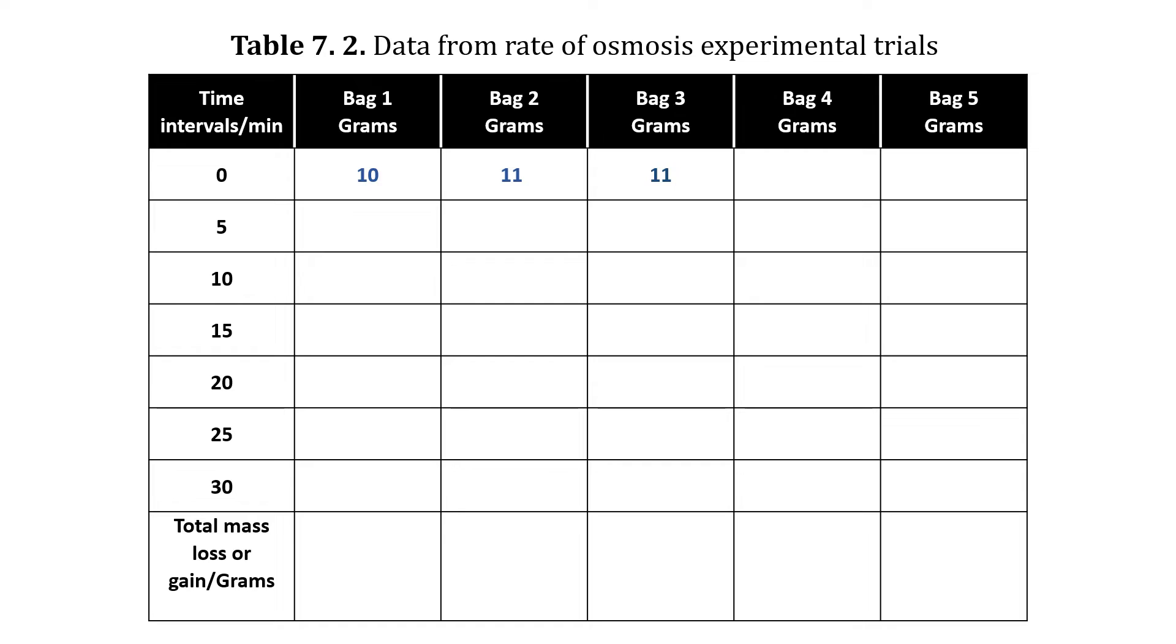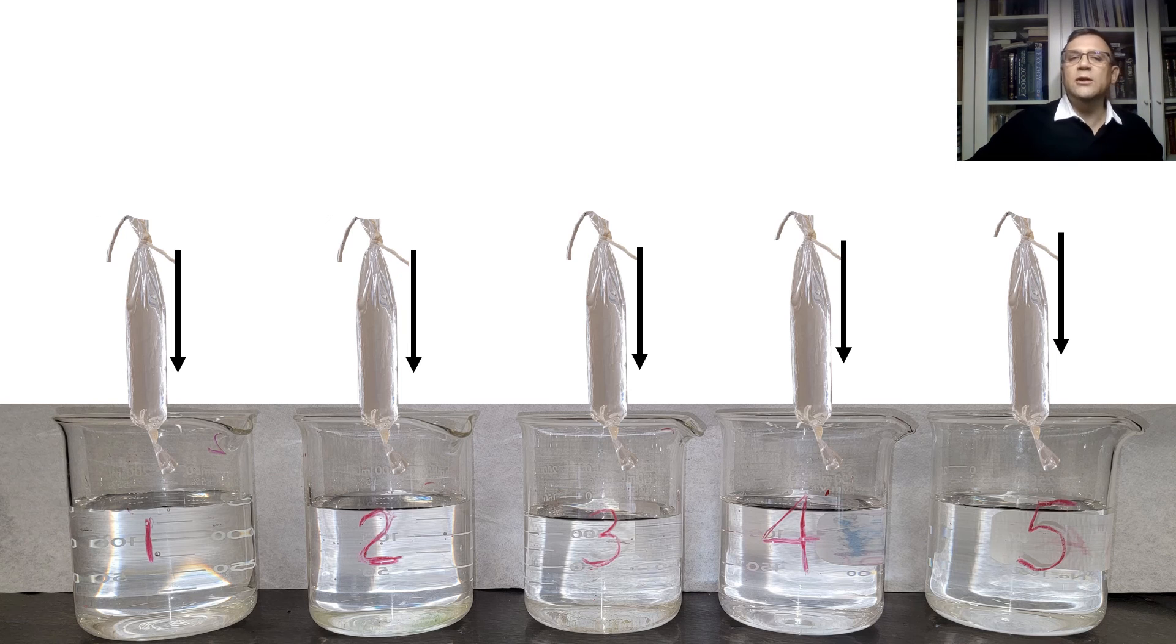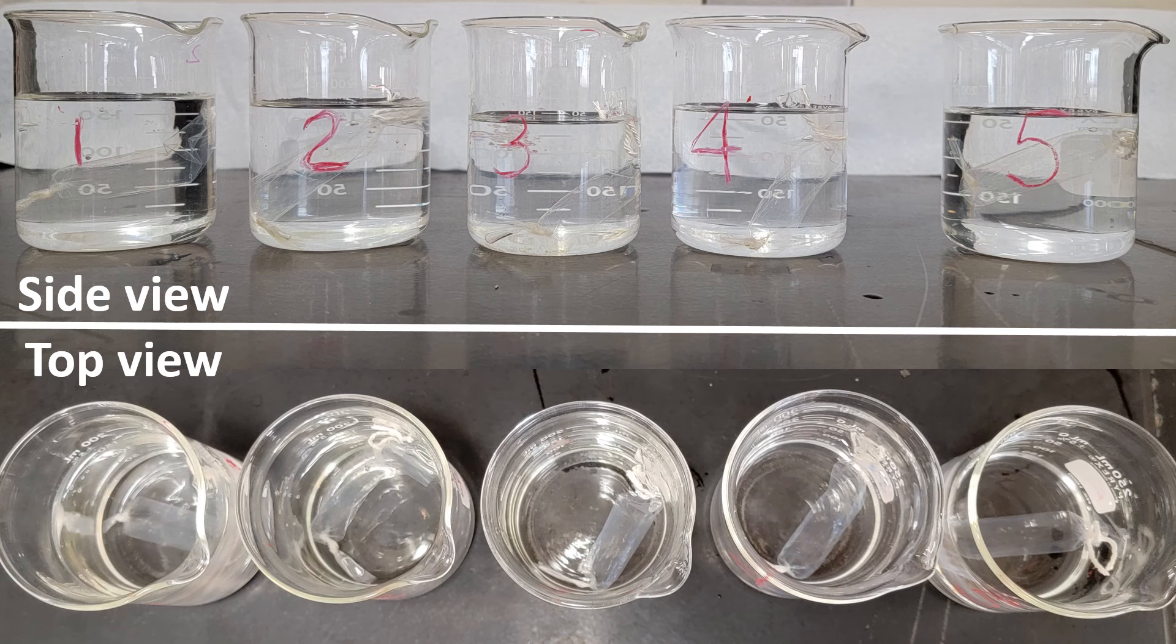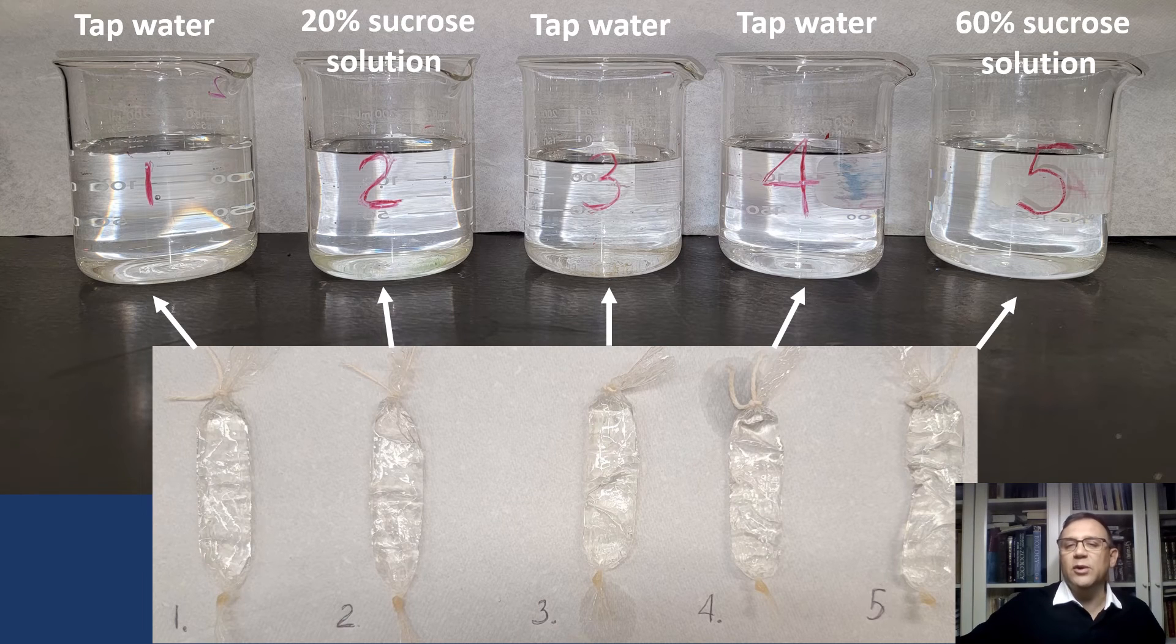Next, we will measure and record the mass of bags four and five. Bag four is 13 grams. Bag five is 10 grams. Now we need to simultaneously submerge all the bags into their respective beakers and leave them there for five minutes. Here is the side and top views of our experimental setup. Note that each bag should be fully covered by the solution in the beaker. After five minutes, carefully remove the bags and place them back to their original spots next to their corresponding beakers.